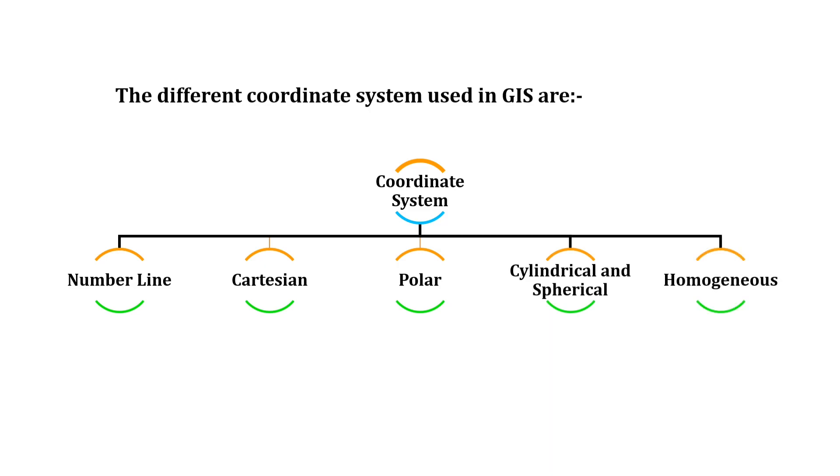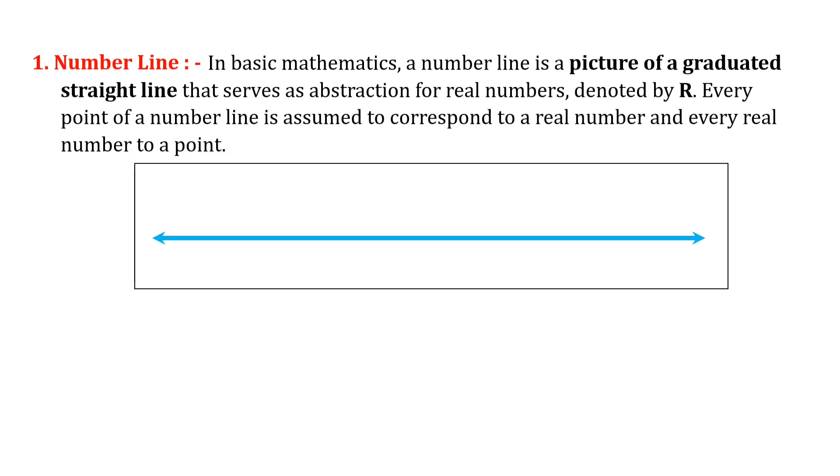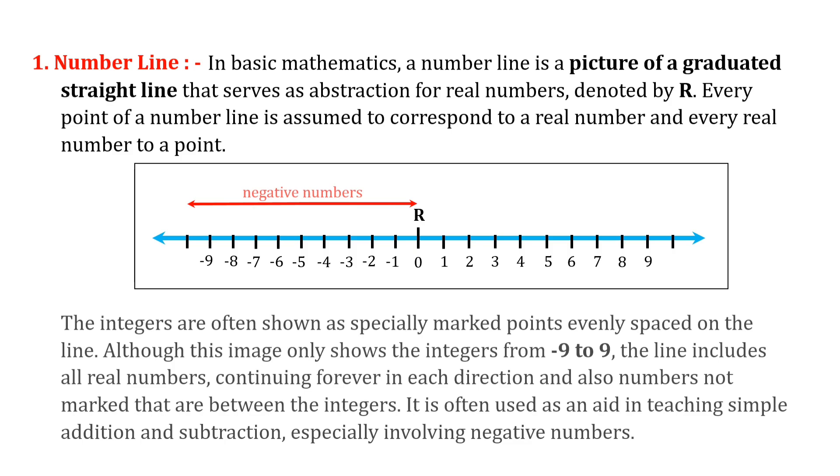Let us now understand all the parts in detail. Number one: number line. In basic mathematics, a number line is a picture of a graduated straight line that serves as abstraction for real numbers denoted by R. Every point of a number line is assumed to correspond to a real number.